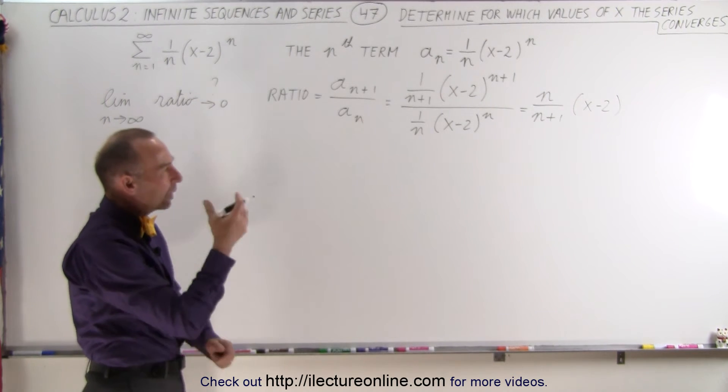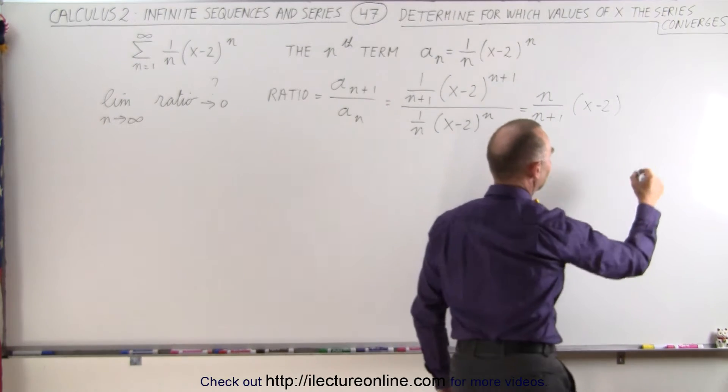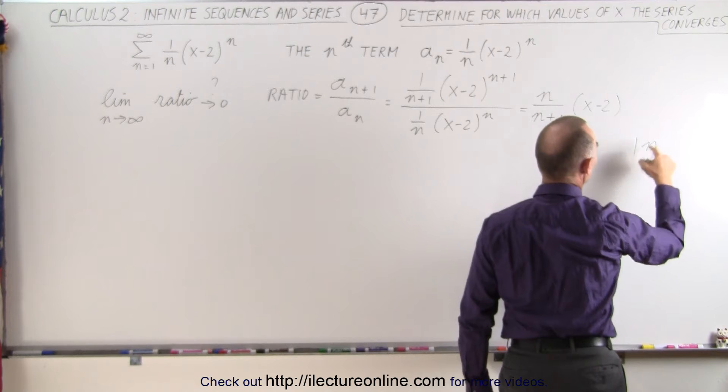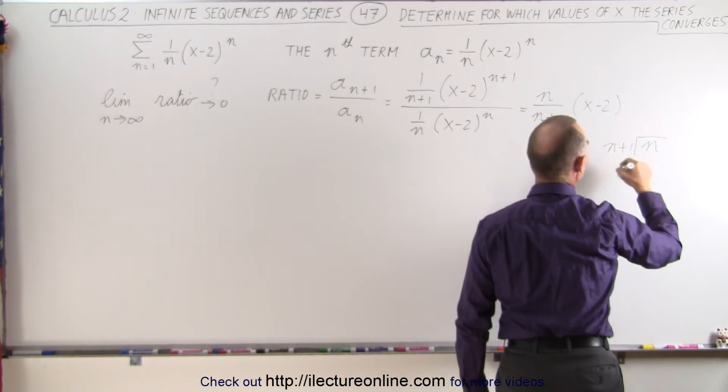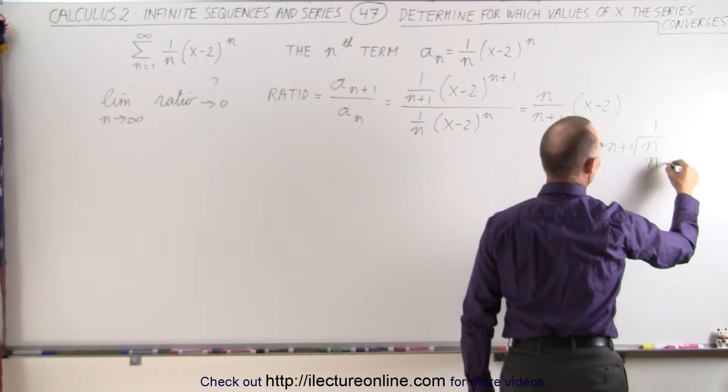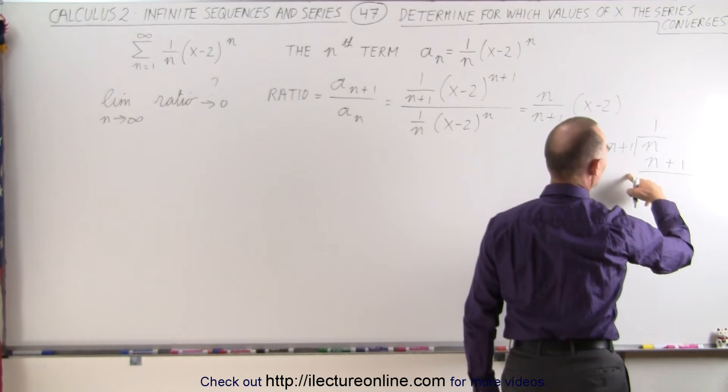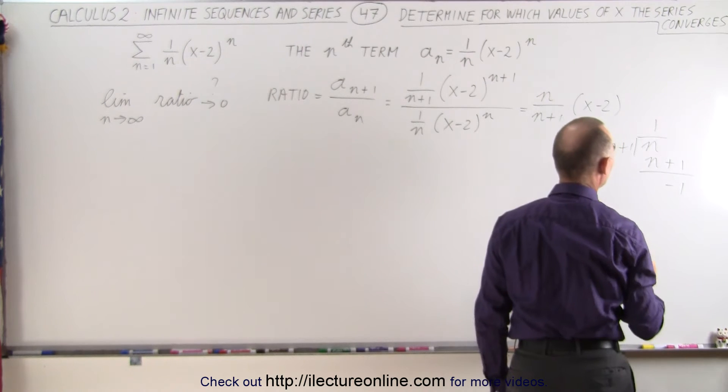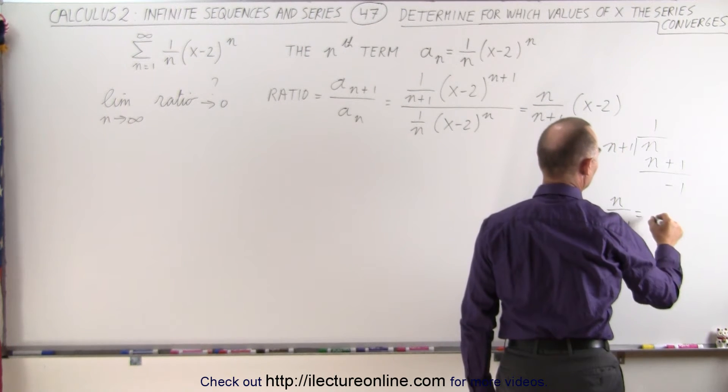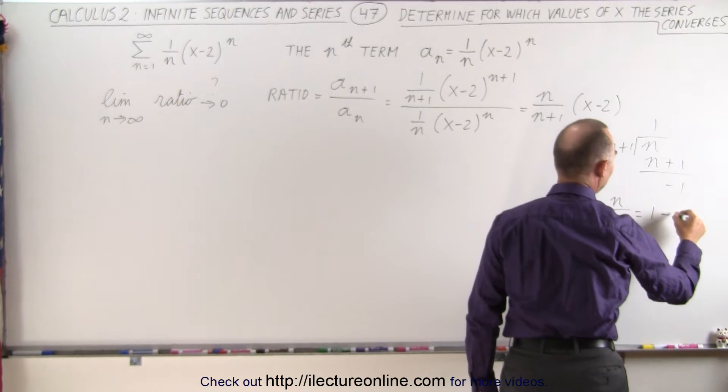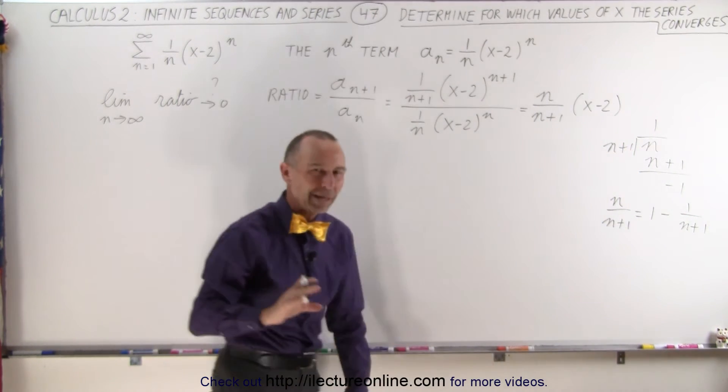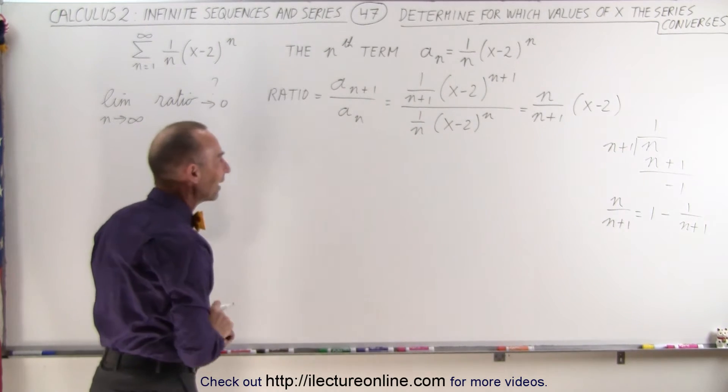But what about the n divided by n plus 1? What do we do with that? Well, what we can do here is divide n by n plus 1. n goes into n one time. One times n plus 1 is n plus 1. When we subtract, we get 0 minus 1, which is minus 1. So that means that n divided by n plus 1 can be written as 1 minus 1 over n plus 1. So let's do that instead because it makes it easier to find the limit.